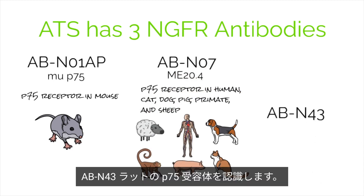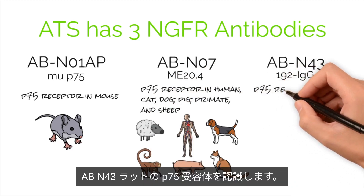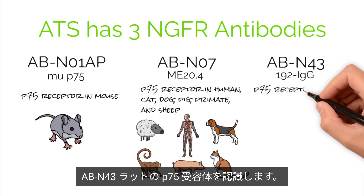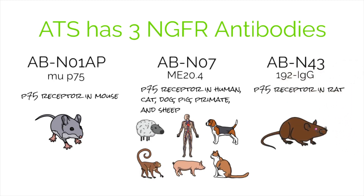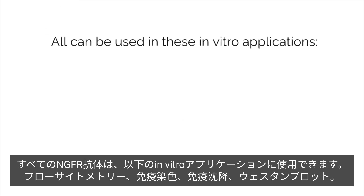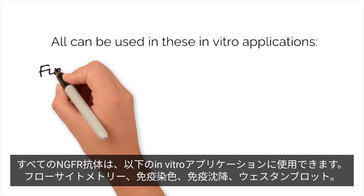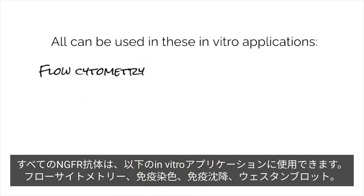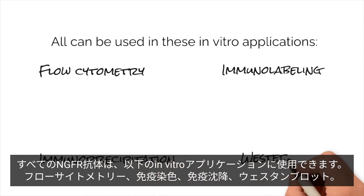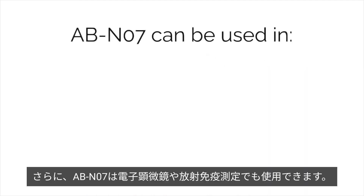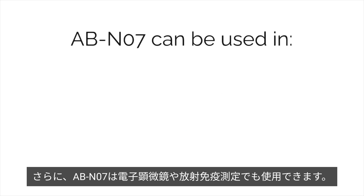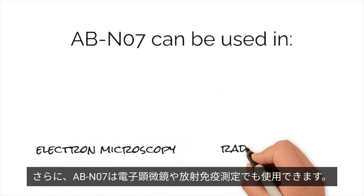ABN43, also known as 192 IgG, recognizes the P75 receptor in rat. Each of these antibodies can be used in the following in vitro applications: flow cytometry, immunolabeling, immunoprecipitation, and western blot. In addition, ABN07 can also be used in electron microscopy and radioimmunoassay.